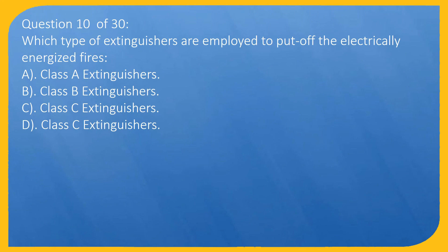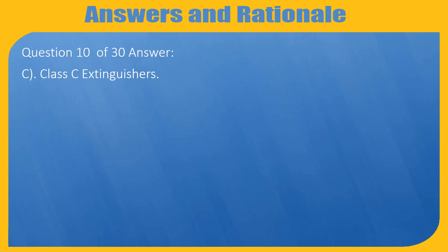Question 10 of 30: Which type of extinguishers are employed to put off the electrically energized fires? A. Class A extinguishers, B. Class B extinguishers, C. Class C extinguishers, D. Class D extinguishers. Answer: C. Class C extinguishers.